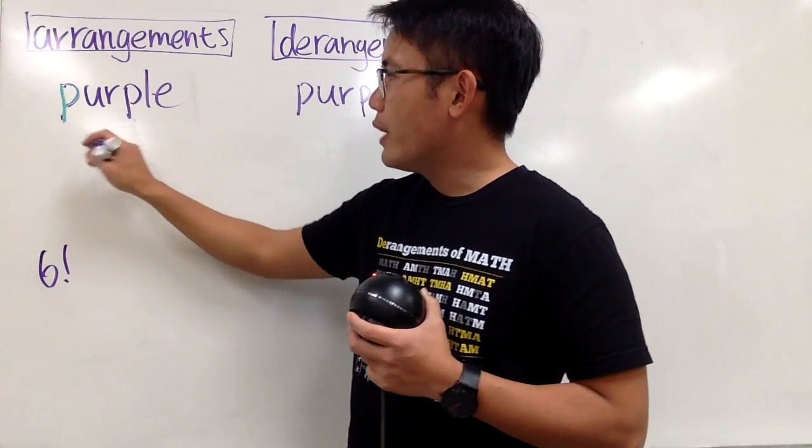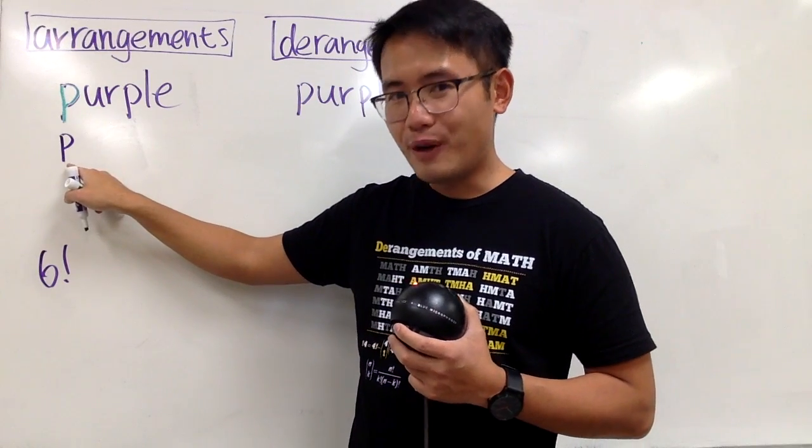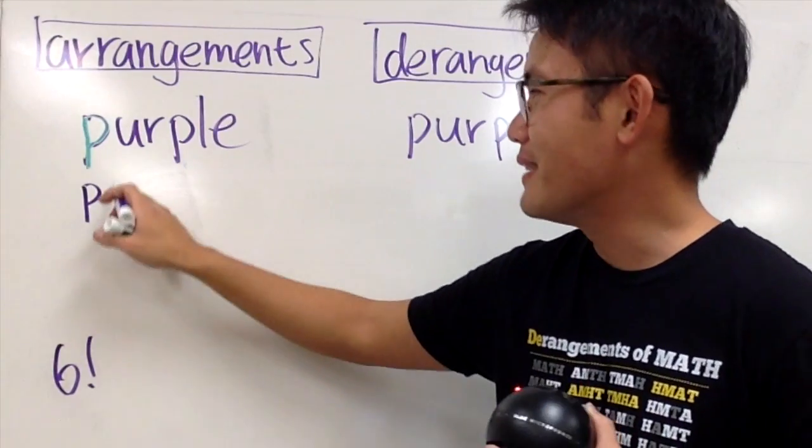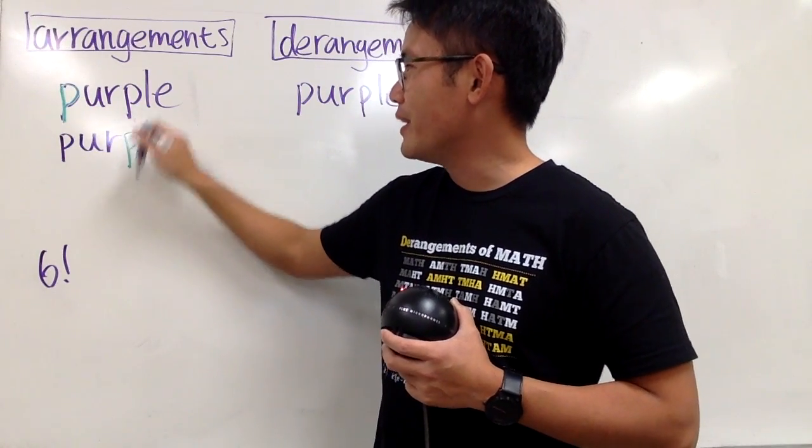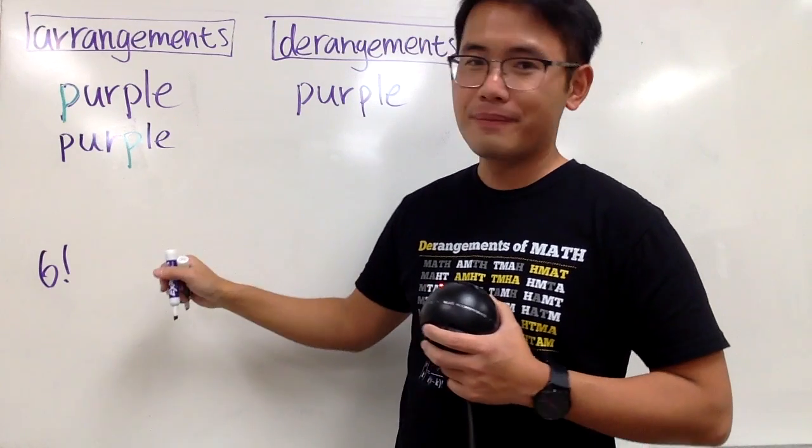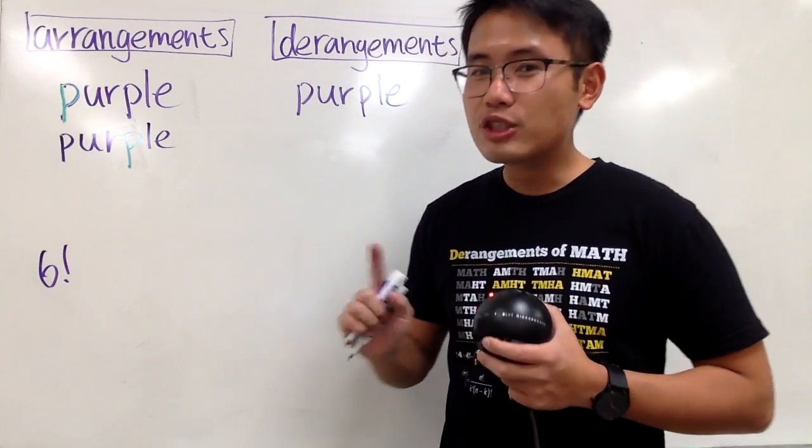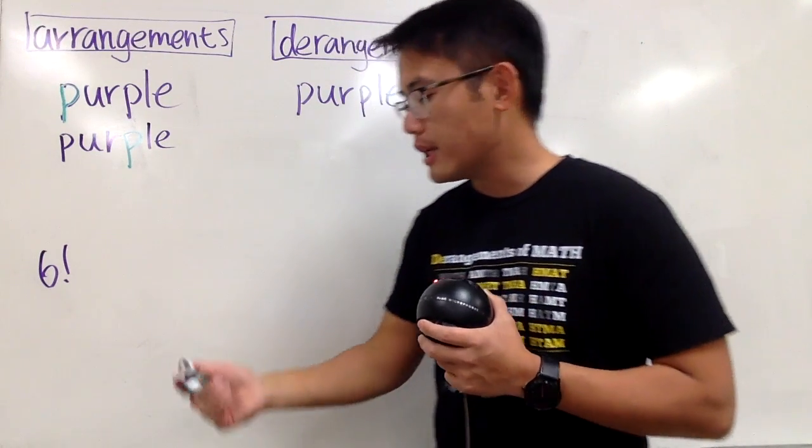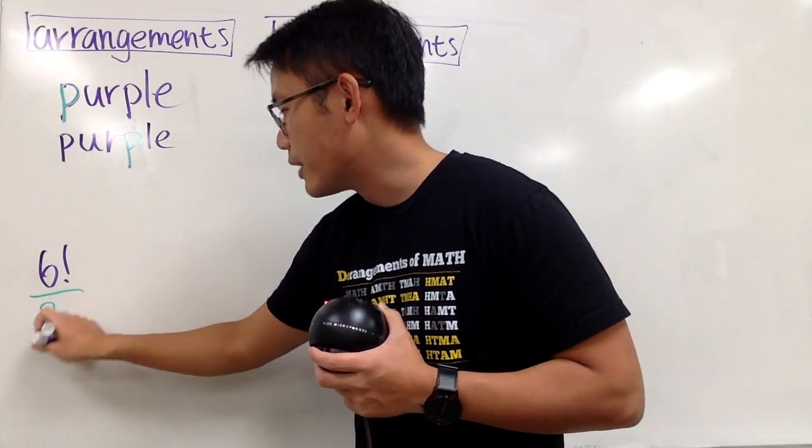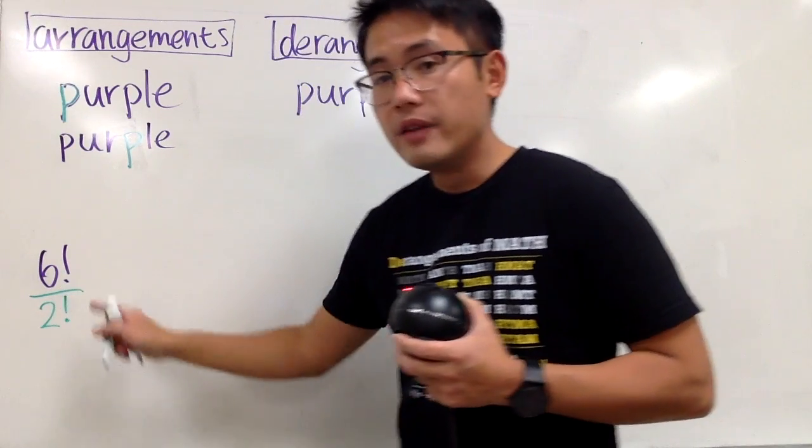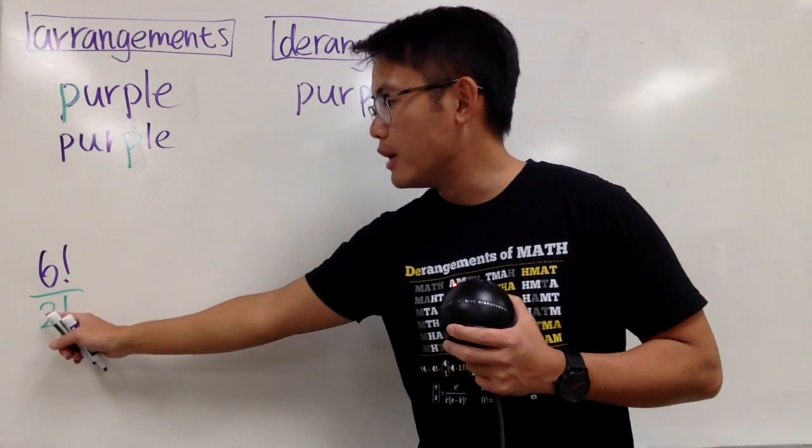When you do 6 factorial, maybe you end up with a situation that this P happens to be first, purple, and then U, R, and then this P happens to be here in green, and then LE. In this case, this is still purple. You don't want this to happen, so what you do is divide it by 2 factorial. We have two P's being the same, so divide by 2 factorial. This is not just 2, even though 2 factorial is 2, but you will have to divide by 2 factorial.